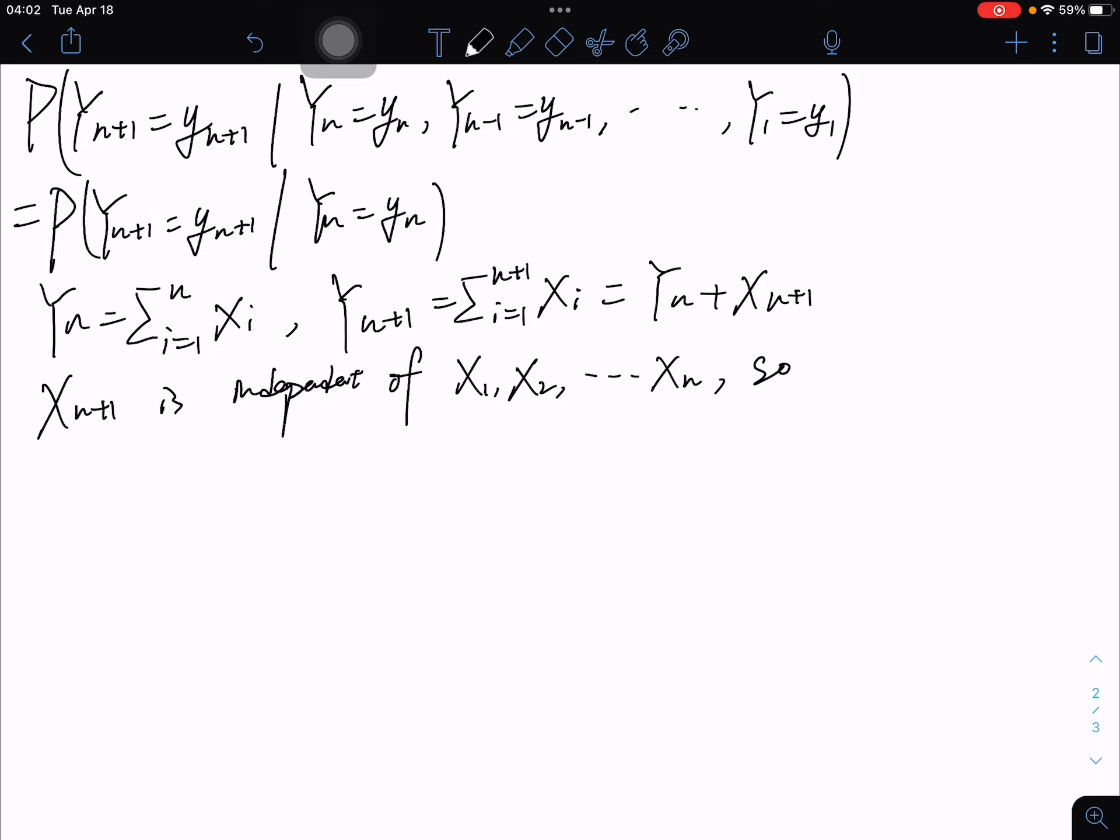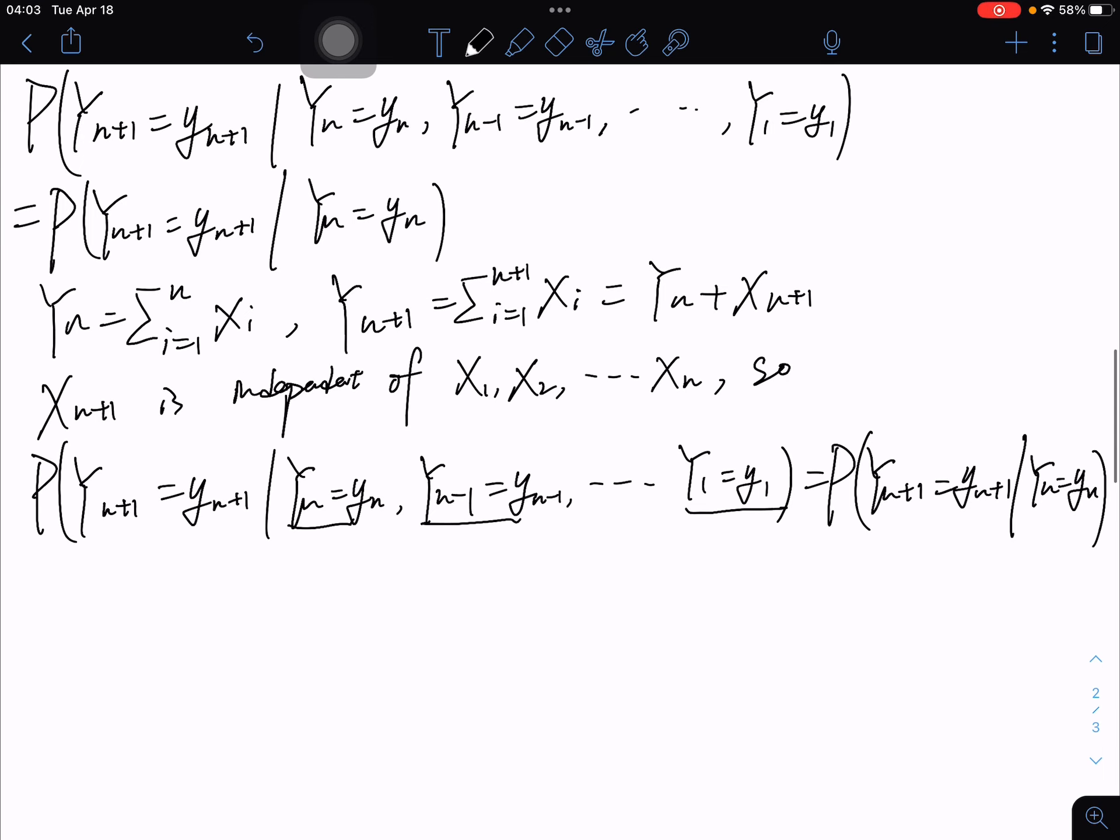we have the conditional probability P(Y_{n+1} = y_{n+1} | Y_n = y_n, Y_{n-1} = y_{n-1}, ..., Y_1 = y_1). Since X_{n+1} is independent, these formulas are actually equal, so P(Y_{n+1} = y_{n+1} | Y_n = y_n, Y_{n-1} = y_{n-1}, ..., Y_1 = y_1) equals P(Y_{n+1} = y_{n+1} | Y_n = y_n).